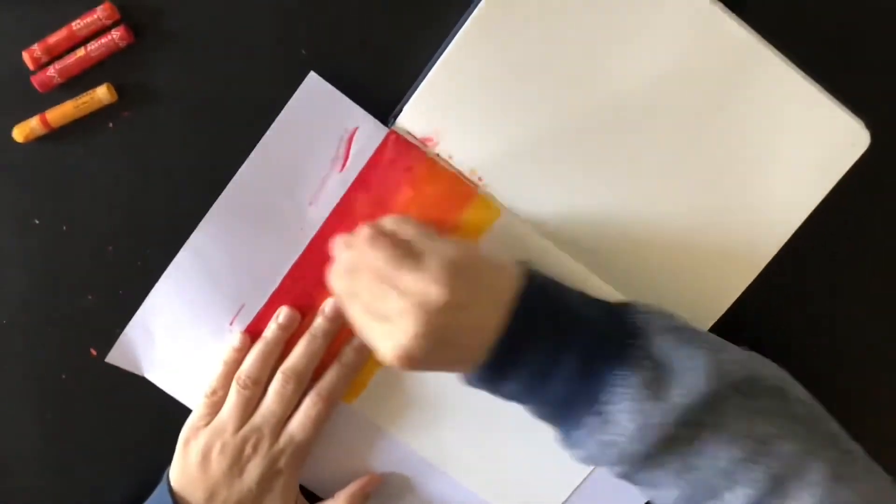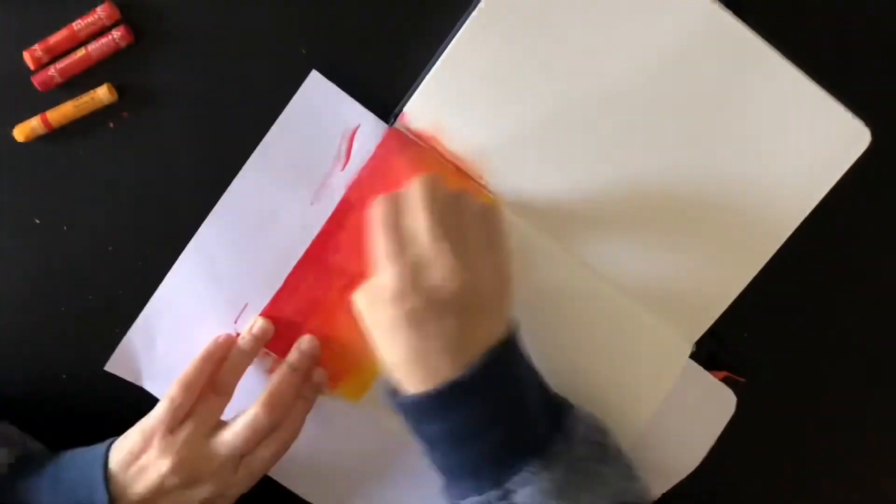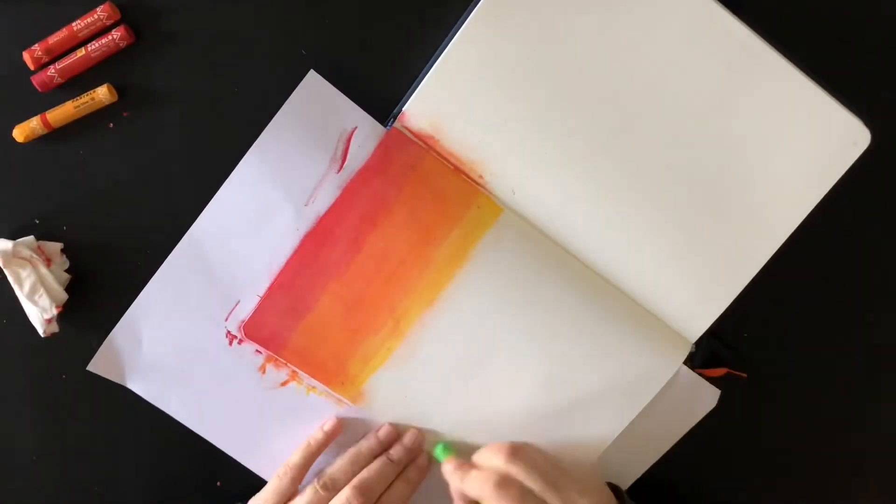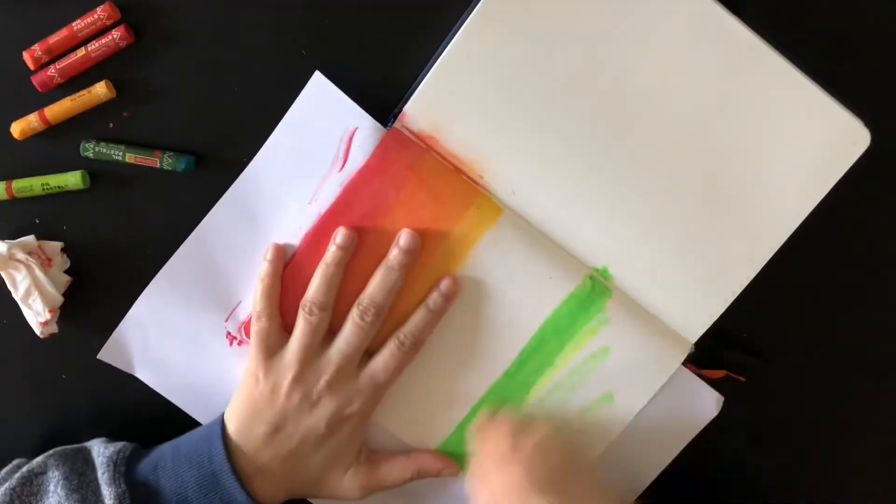Now I'm blending all three colors using tissue paper. For green, I'm using two different shades of green and yellow.